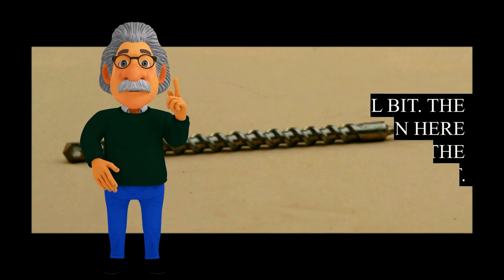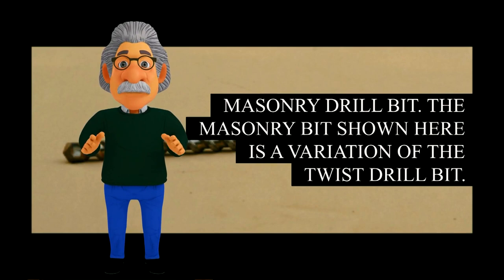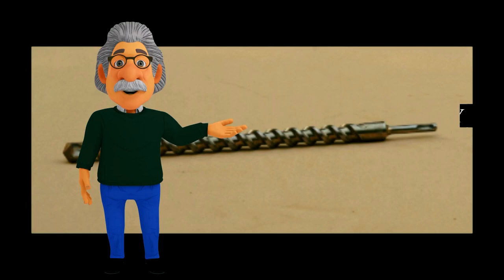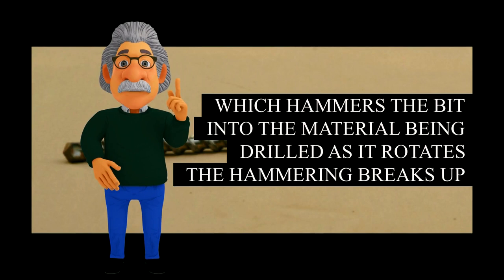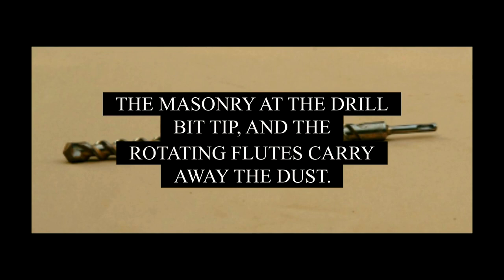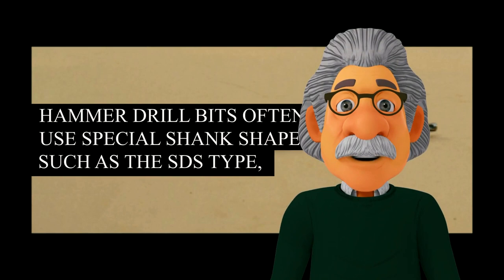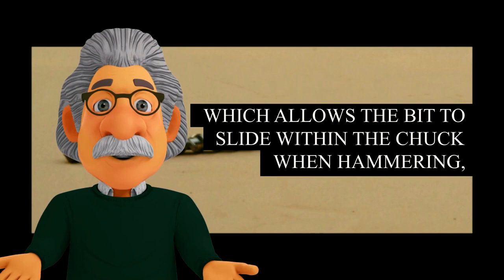Masonry Drill Bit. The masonry bit shown here is a variation of the twist drill bit. The bulk of the tool is a relatively soft steel, and is machined with a mill rather than ground. An insert of tungsten carbide is brazed into the steel to provide the cutting edges. Masonry bits typically are used with a hammer drill, which hammers the bit into the material being drilled as it rotates; the hammer breaks up the masonry at the drill bit tip, and the rotating flutes carry away the dust. Hammer drill bits often use special shank shapes such as the SDS type, which allows the bit to slide within the chuck when hammering, without the whole heavy chuck executing the hammering motion.